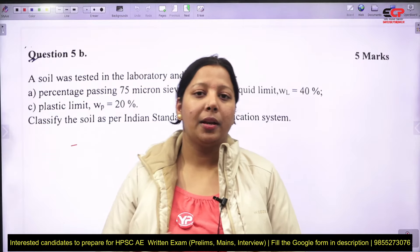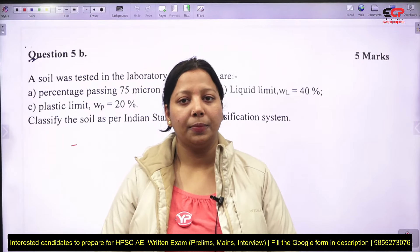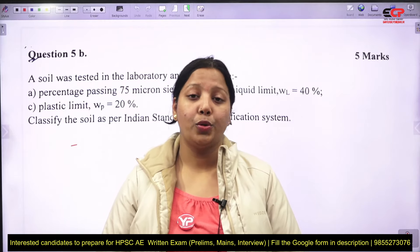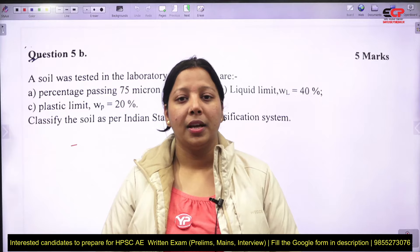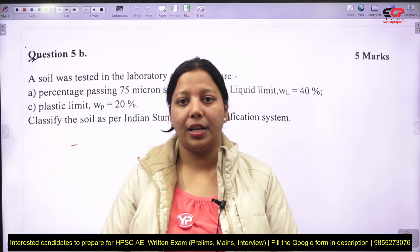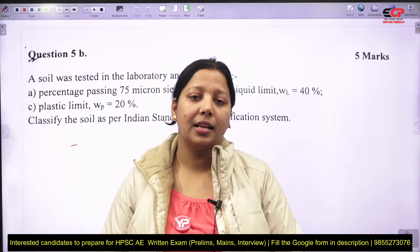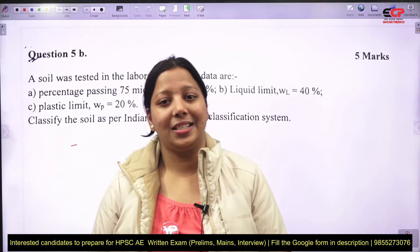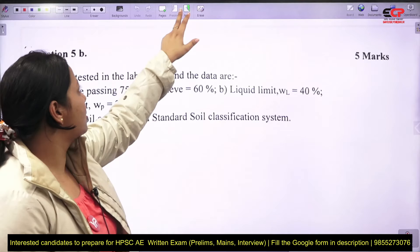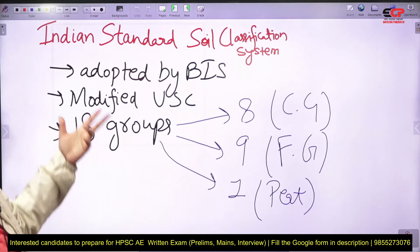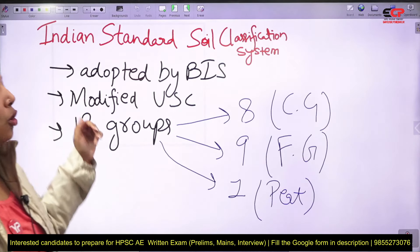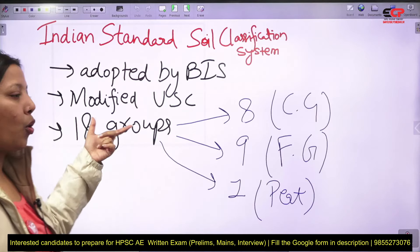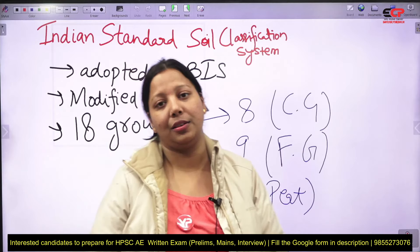Do you know how many classification systems we have? First, the Indian Standard Soil Classification System. Second, the Unified Soil Classification System. Third, the Texture Classification System. Fourth, the Particle Size Classification System. The Indian Standard Soil Classification is adopted by BIS — Bureau of Indian Standards — and it is a modified version of the Unified Soil Classification System.